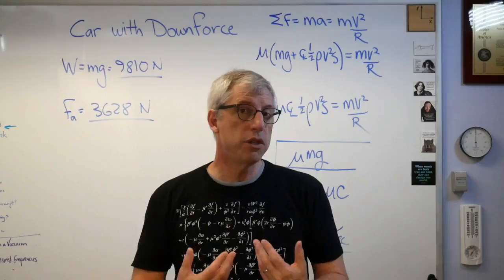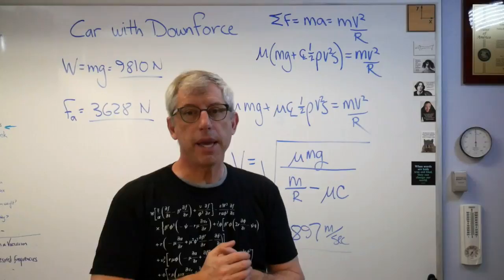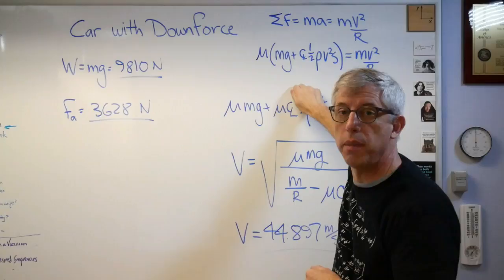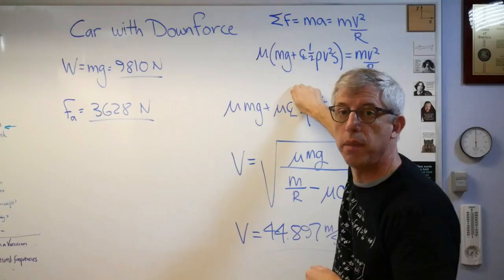So there you got it. F still equals MA, gang. Now when you want to figure out the shear forces from the tires, it's mass of the car times the gravity plus now this aerodynamic force, and mass of the car does not cancel out anymore like it did when that term was zero. So there you are. Hope this helps, and I'll see you next time.